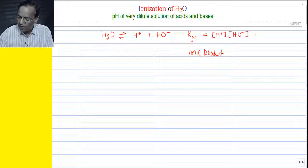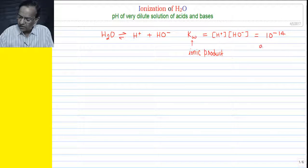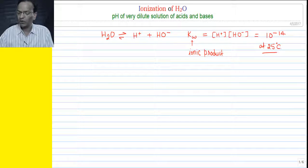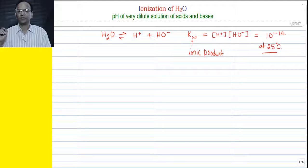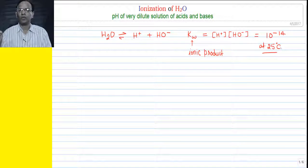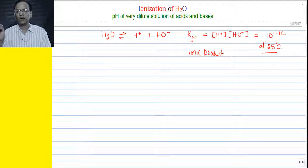The value of Kw is 10 raised to the power minus 14 at 25°C. That is very important. We know that equilibrium constant is a function of temperature, so the value of Kw is 10⁻¹⁴ at 25°C.